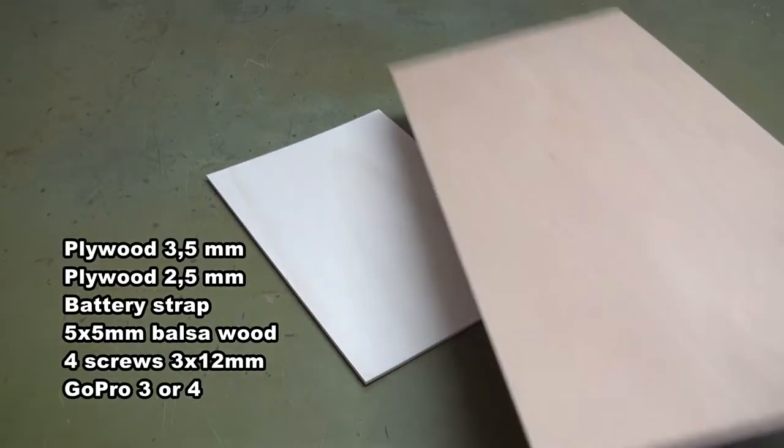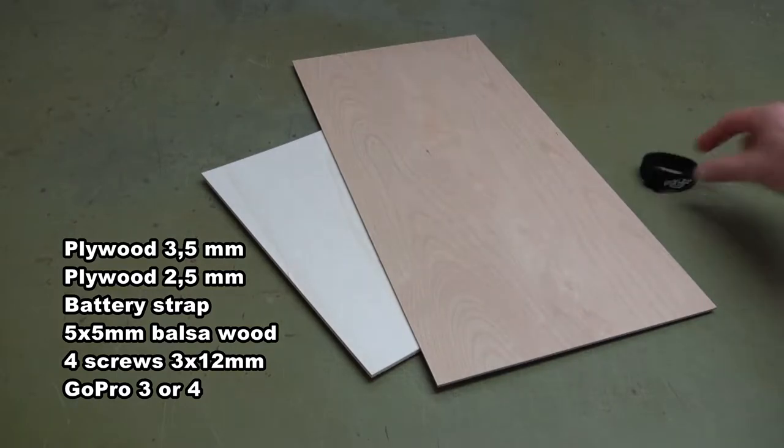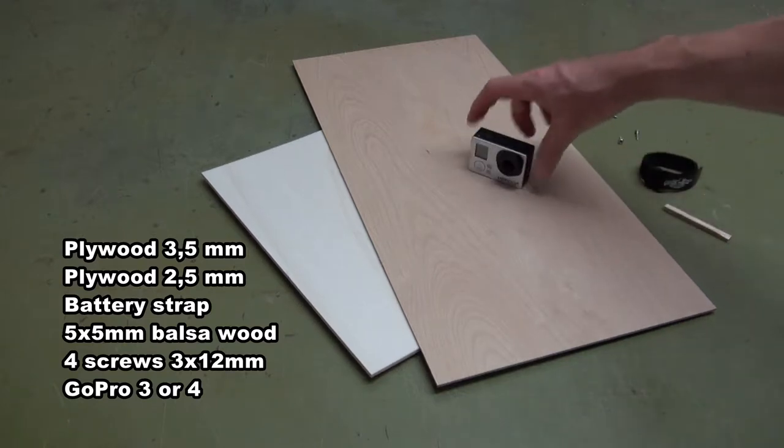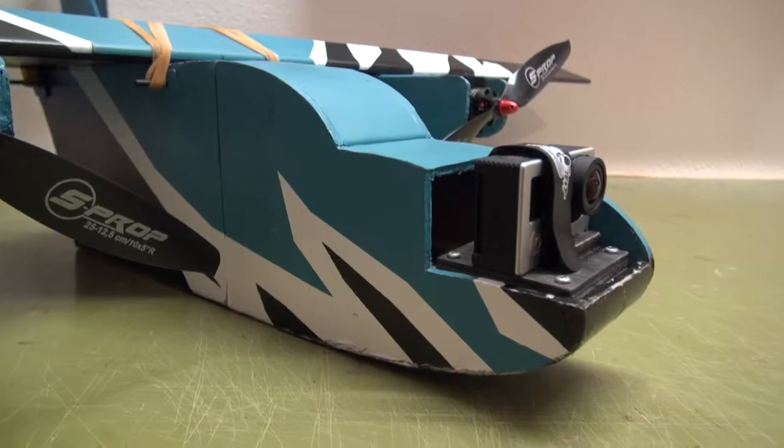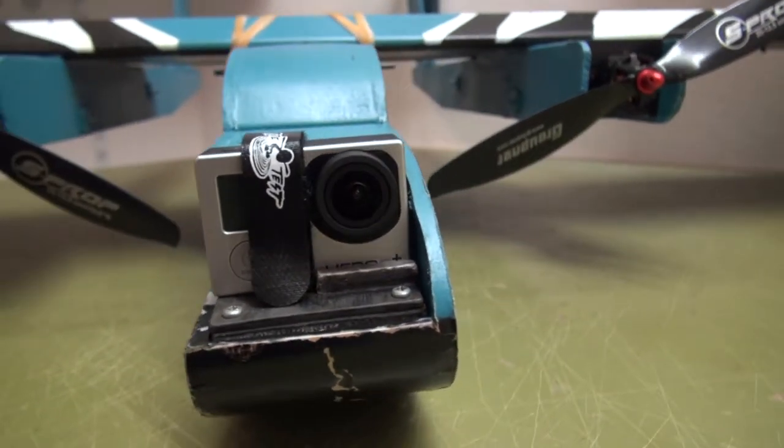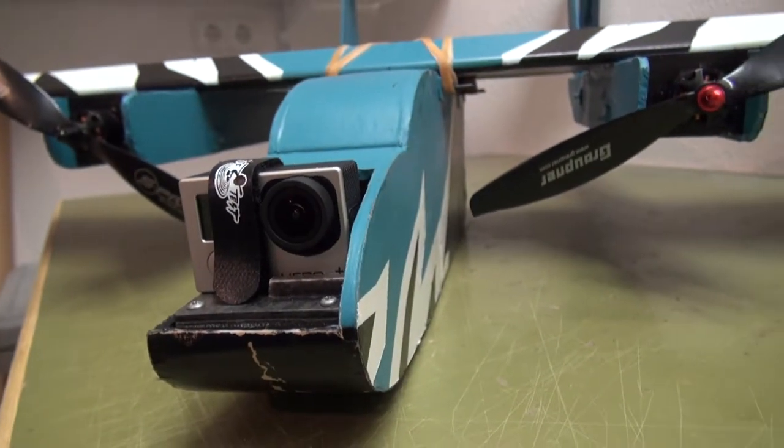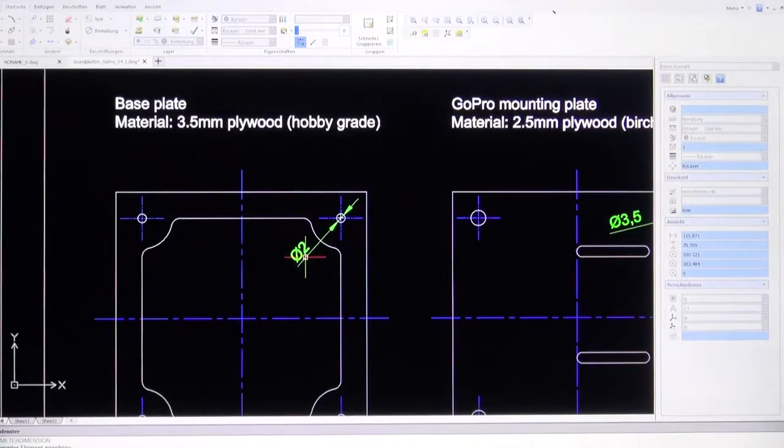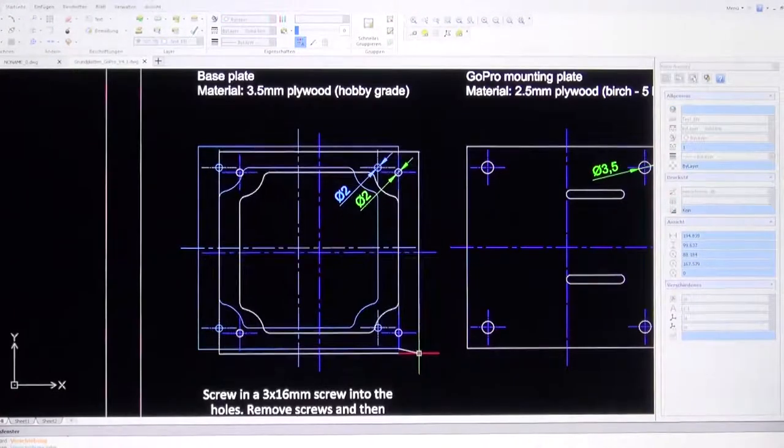All you need is some plywood, a battery strap, a piece of balsa wood, four screws, a GoPro and an RC plane. In this build video it's a Flight Test Bronco, which is a perfect platform for GoPro flying. For free plans and a list of materials, check the description below.